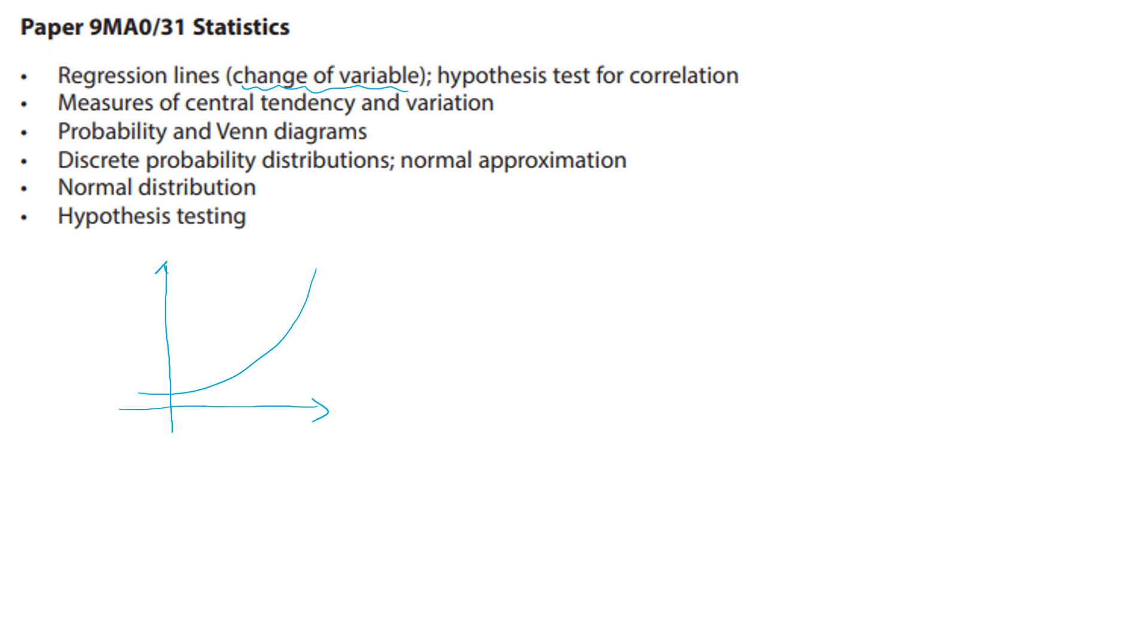So there's two different ways we can think about an exponential model: you can have y equals ax to the n or you can have y equals ab to the x.